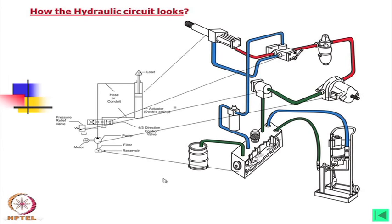In the next slide, I have presented how the hydraulic circuit looks — not a photographic view but drawn by computer graphics. Comparing with the previous circuit, this actuator looks somewhat like this, and this is the directional control valve, this is the pressure relief valve, this is the pump, and this is the reservoir. The motor is not shown, but a slightly more elaborate reservoir is shown, along with another system to pump out the oil after 3 to 6 months, filter it, and put it back inside to reduce contamination.